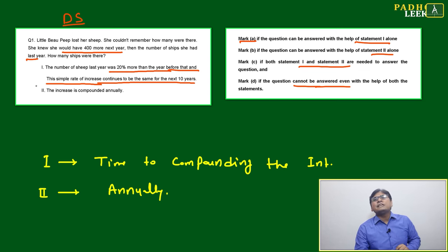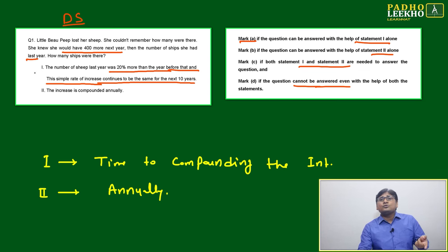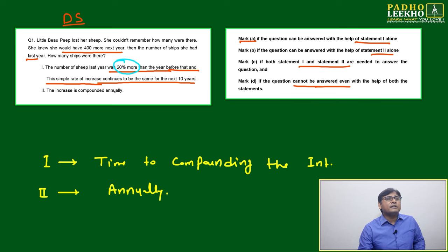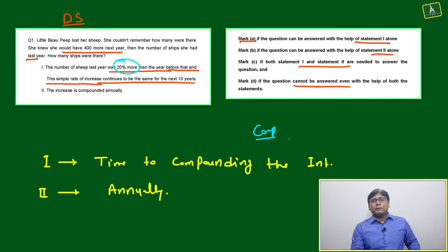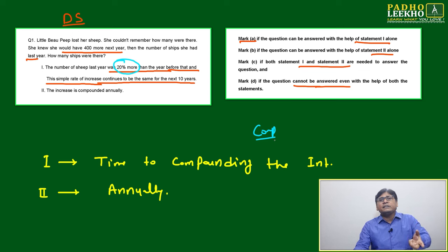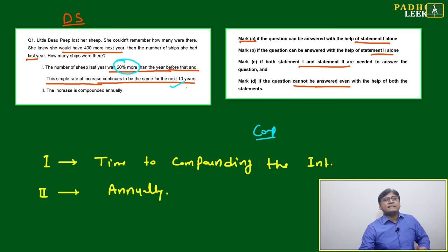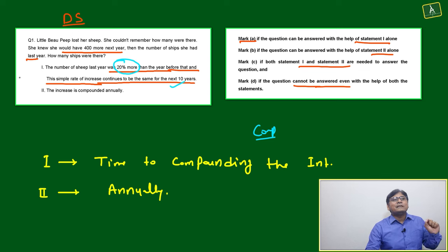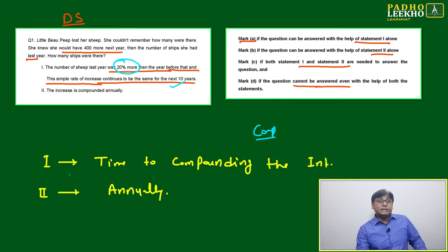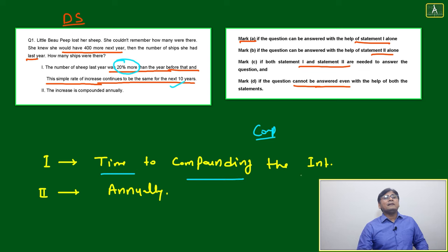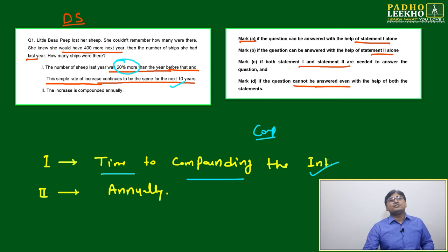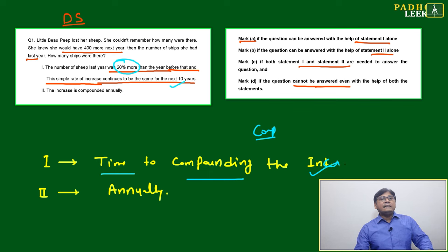However, Statement 1 is not 100% sufficient. In Data Sufficiency, we must be extra careful. The 20% rate is given, but the compounding period is not specified anywhere — it could be compounded annually, half-yearly, or monthly. Because the compounding frequency is not given, Statement 1 alone is not sufficient.